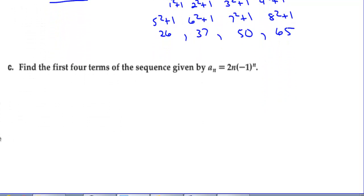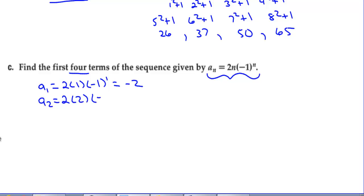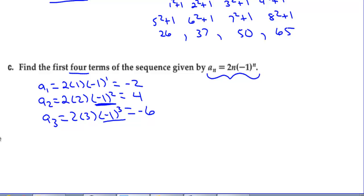Find the first four terms of the sequence given by an explicit formula. a sub 1 = 2(1)(−1)¹ = −2. a sub 2 = 2(2)(−1)² = 4. a sub 3 = 2(3)(−1)³ = −6. And the fourth term is 2(4)(−1)⁴ = 8.